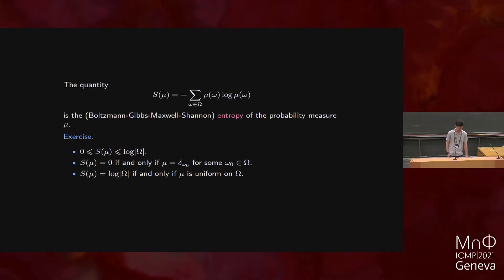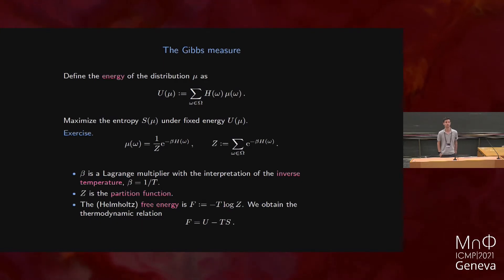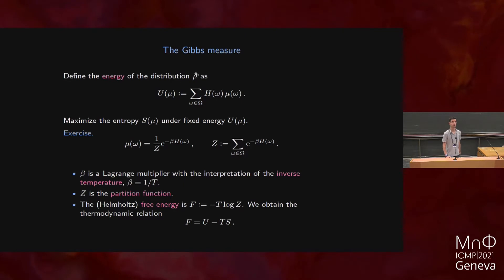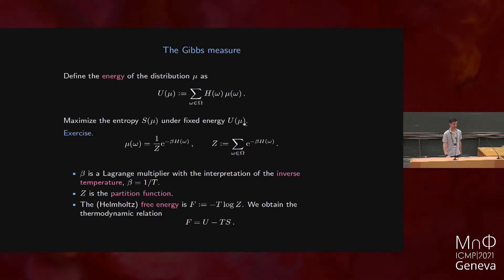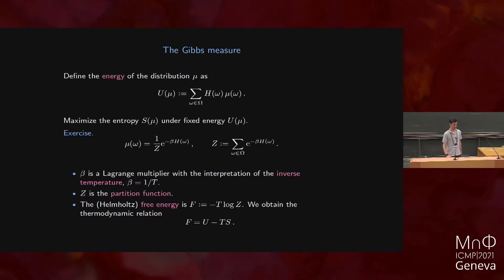So those are the basic properties of the entropy. Now, let's go back to the question of the Gibbs measure. We can make the initial program precise: I have a probability distribution mu on my configuration space omega. The energy is given by the expectation of my energy function H, and the task is very simple. It's second-semester calculus: I would like to maximize the function S of mu under the constraint that the energy is fixed. This is a simple exercise using Lagrange multipliers.